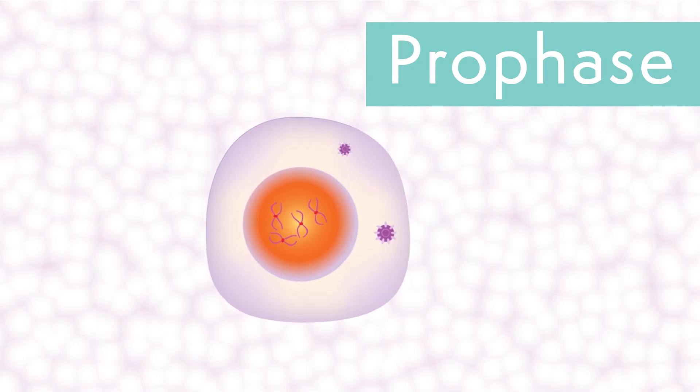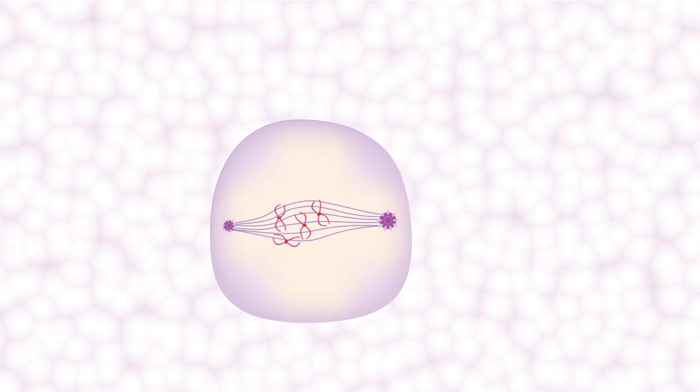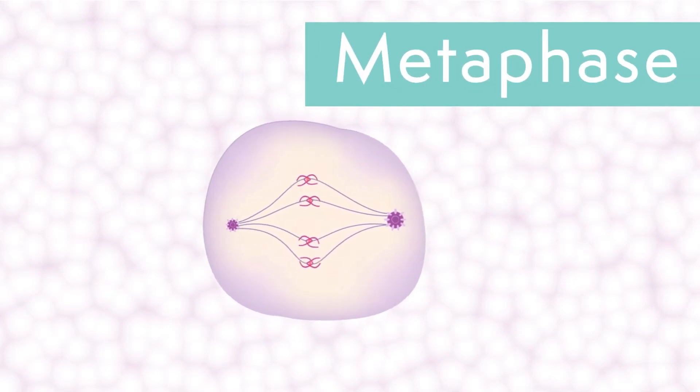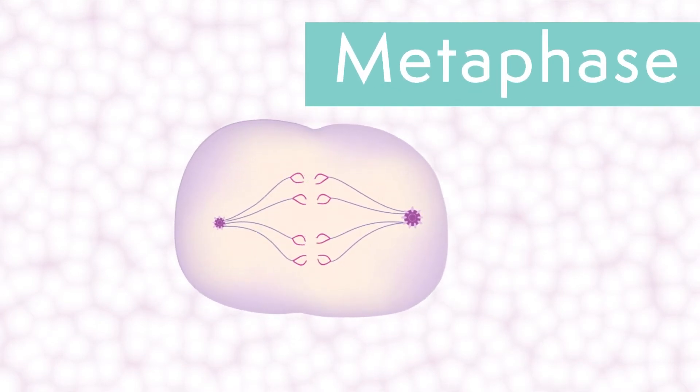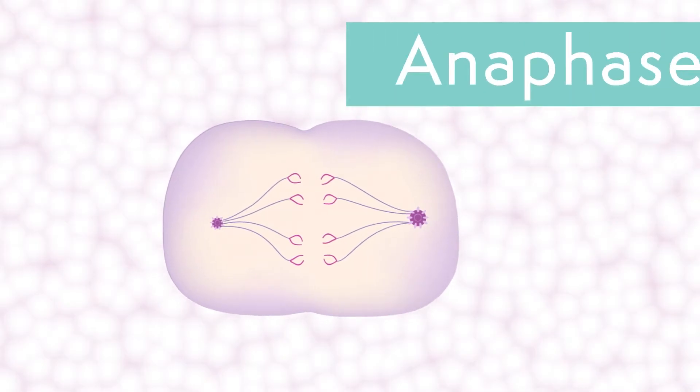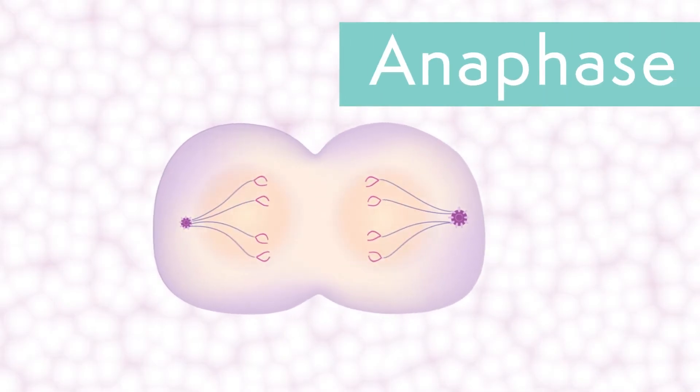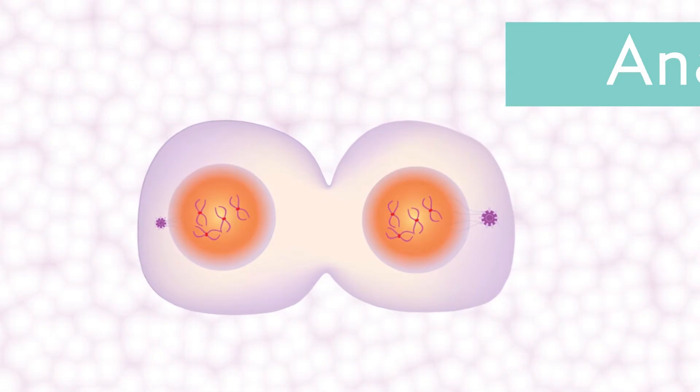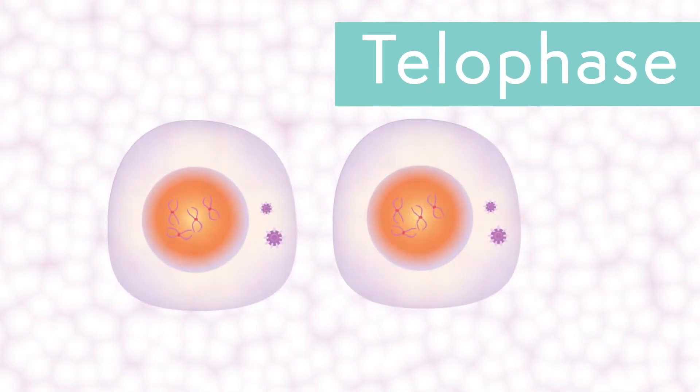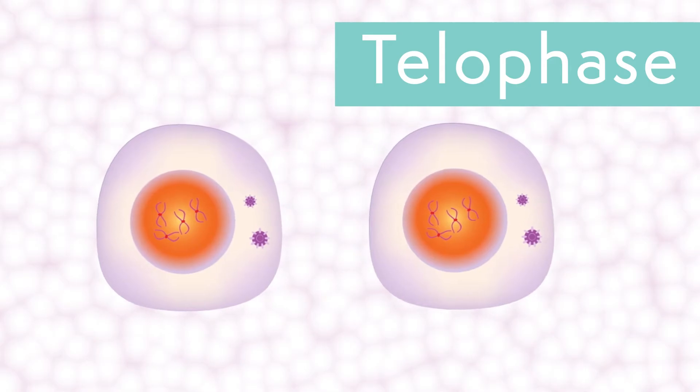The cell cycle consists of four basic phases. First is prophase, when the cell makes a copy of its DNA and gets ready to split. Next is metaphase, when the DNA lines up ready to divide. Then comes anaphase, when the cell starts to split in two. And lastly telophase, when an outer membrane forms around each part, making two new cells.